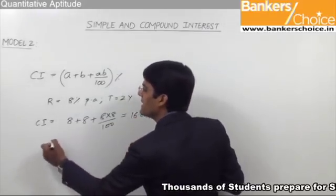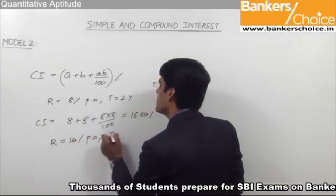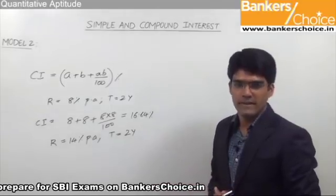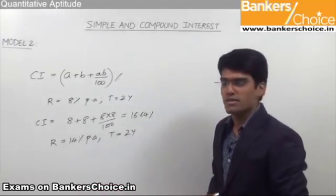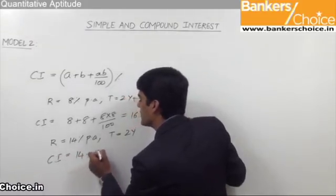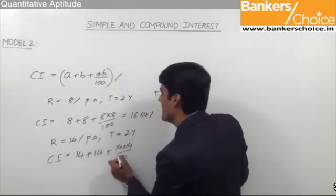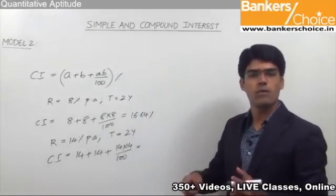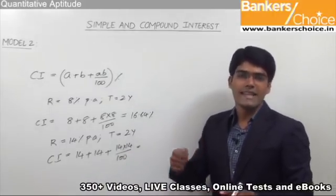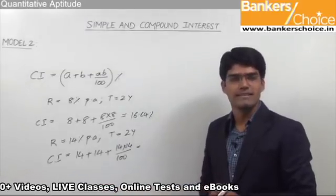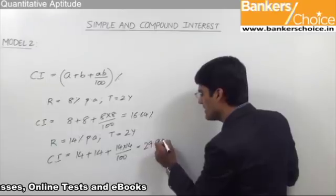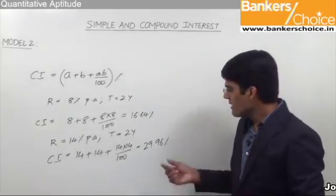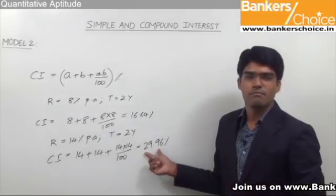Similarly, at 14% per annum for 2 years, using a + b + ab/100: 14 + 14 + (14 × 14)/100 = 28 + 196/100 = 28 + 1.96 = 29.96%. If the options allow approximate calculation, we can take it as approximately 30% and get the answer much faster.